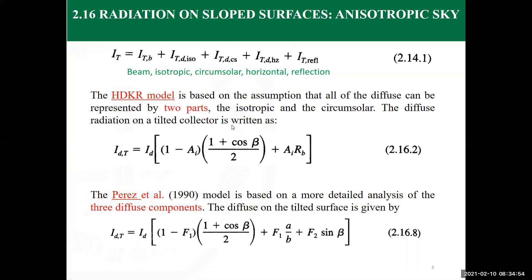These approximations are the anisotropic sky models: the HDKR model, which is a modest addition to the isotropic model, and the Perez model, which is more detailed and more complex in expression, meaning it becomes more accurate but tedious in calculations. The HDKR model is the one most commonly used in many applications. Throughout the rest of the course, we will rely on either the isotropic model or the HDKR model for calculations of diffuse radiation on a tilted surface.